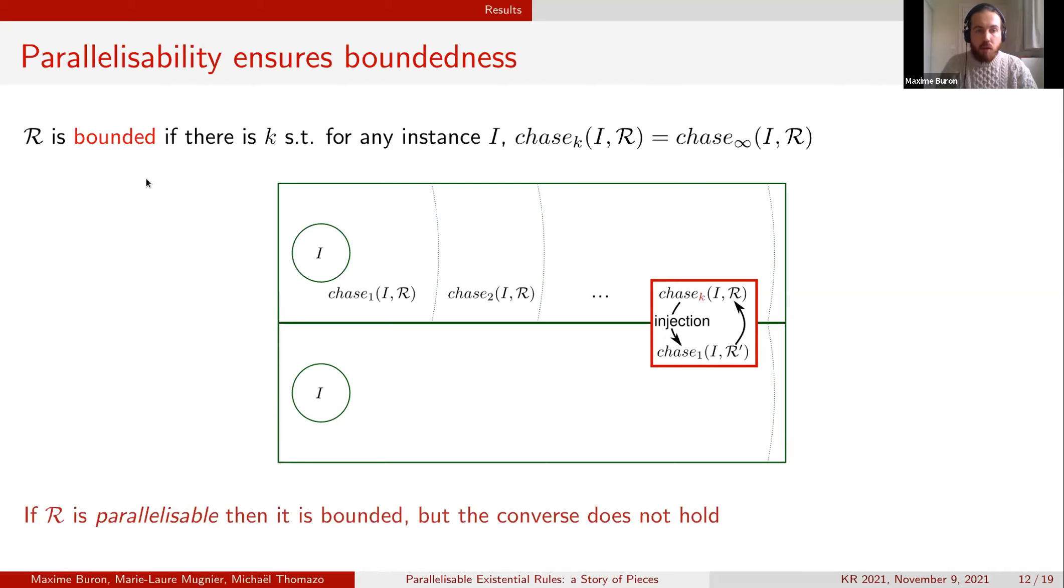We can easily show that if a set of rules is parallelisable then it is bounded, meaning that there exists a k such that for any instance the chase using R terminates in k steps. What is surprising here is that actually boundedness is not sufficient to imply parallelisable.